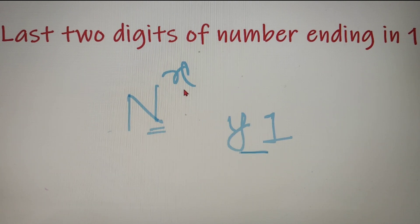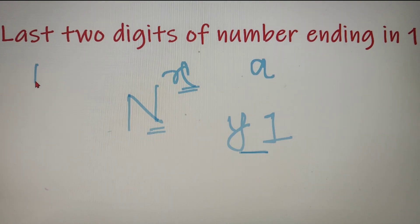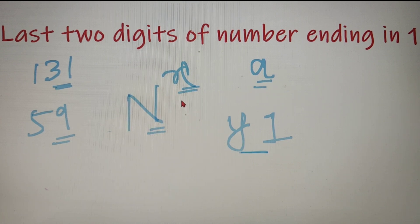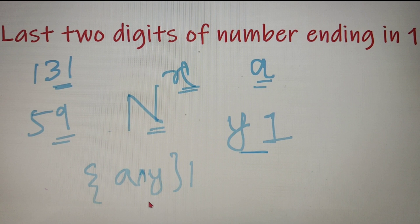Now let's assume that the last digit of the power x is a. For example, if the power is 131 then a = 1, and if the power is 59 then a = 9. So the last two digits of n^x is equal to the unit digit of (a × y), followed by 1. In other words, the last two digits equal the last digit of (a × y) and 1.